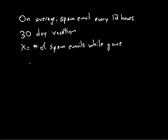First we're going to look at the distribution of X, and then we're going to calculate the probability that I have at least 50 spam emails when I return. So for this random variable X, it can have values 0, 1, 2, etc. It could be I get 0 emails, 1 email, 2 emails. It could be I get 5 billion emails, which would not be very likely, as 0 emails would not be very likely — but certainly possible, at least under the theoretical distribution.